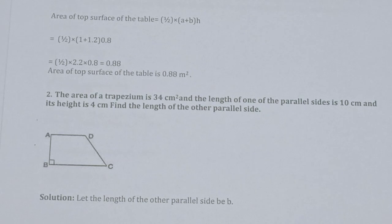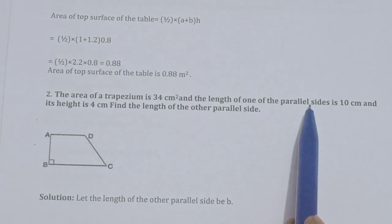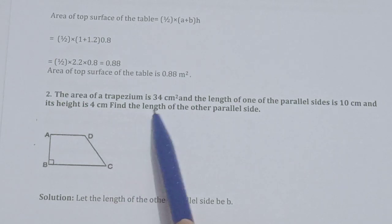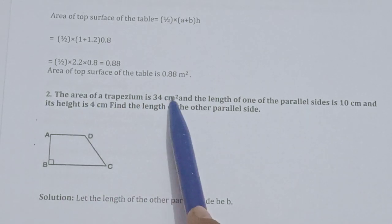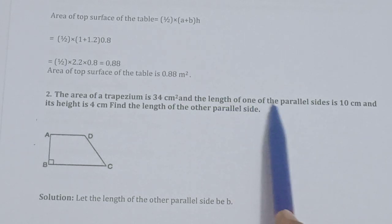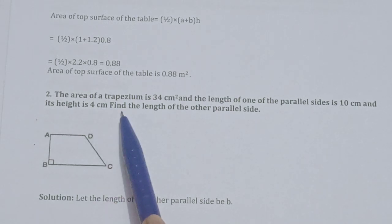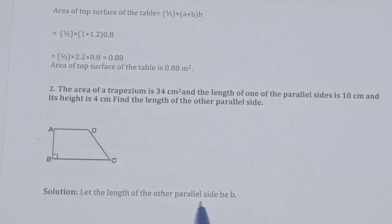Now let's come to question number 2. The area of a trapezium is 34 cm square, the length of one of the parallel sides is 10 cm, and its height is 4 cm. Find the length of the other parallel side. We have to find the length of B.